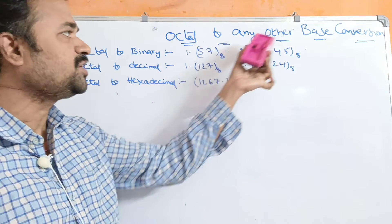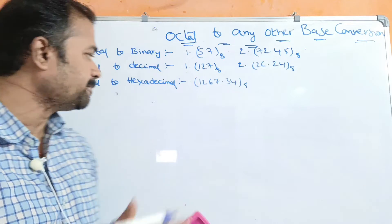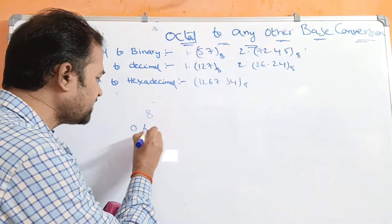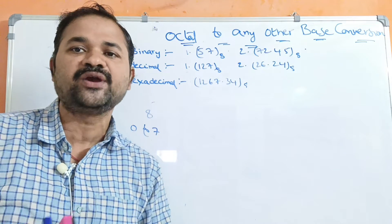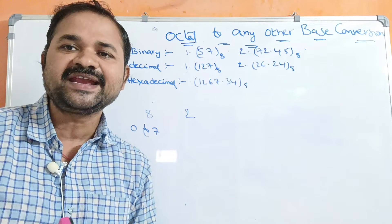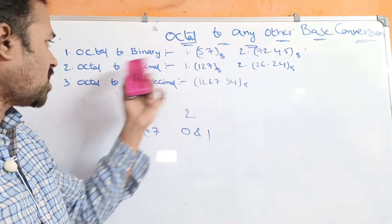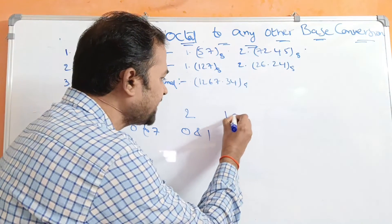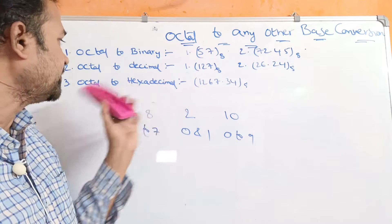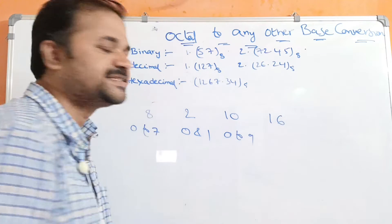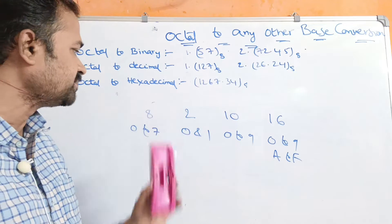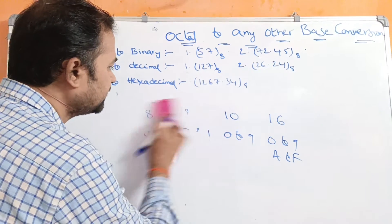Let us discuss octal to any other base conversion. Octal means base value is 8, so an octal number mainly contains 8 symbols from 0 to 7. In this video we are going to discuss how to convert an octal number to binary, decimal, and hexadecimal. Binary means base value is 2 with symbols 0 and 1. Decimal means base value is 10 with symbols 0 to 9. Hexadecimal mainly contains 16 symbols from 0 to 9 and A to F. So mainly we have 4 types of number systems.